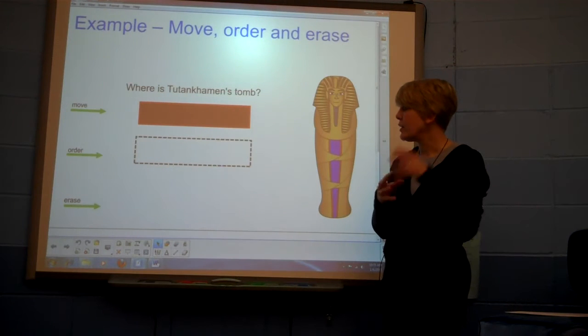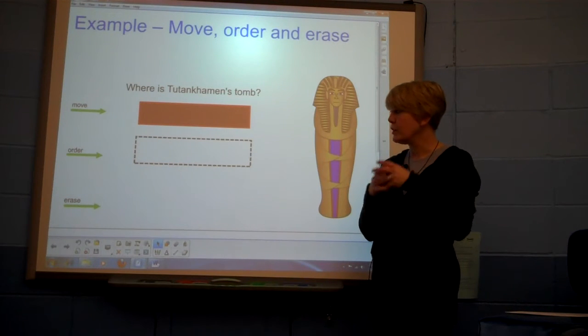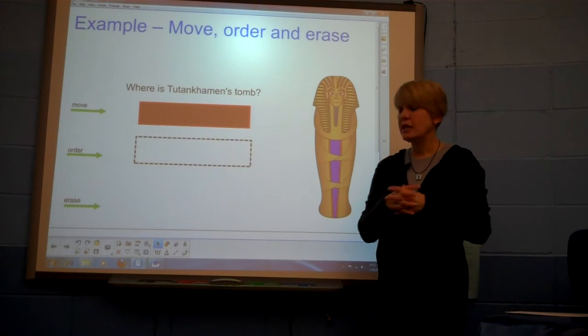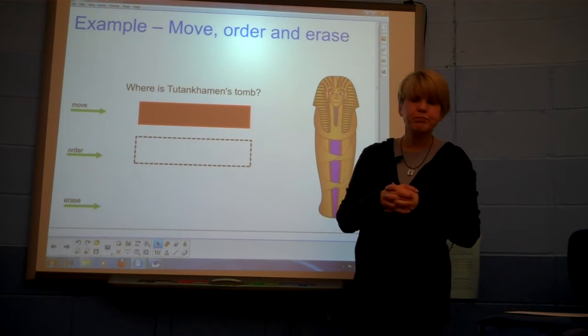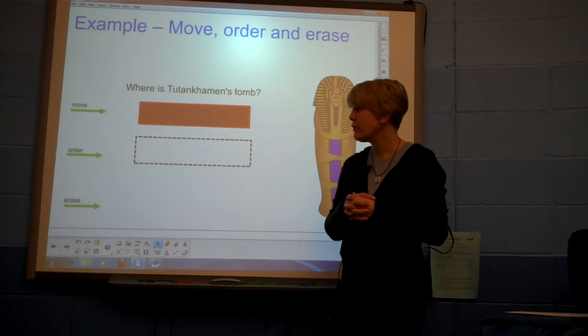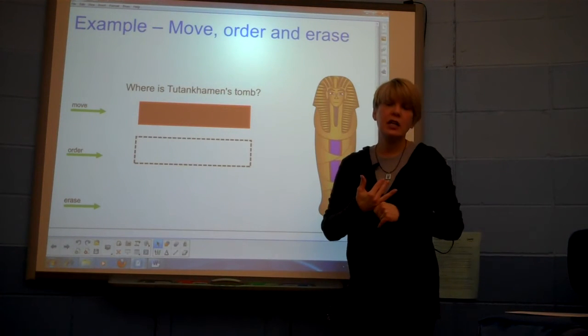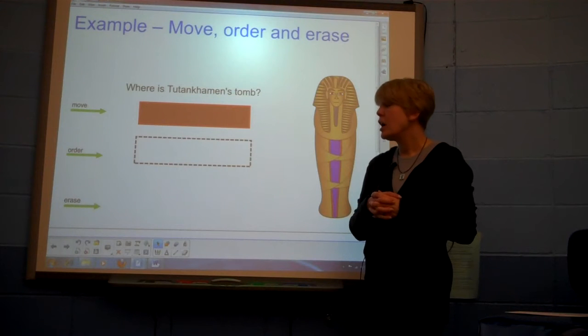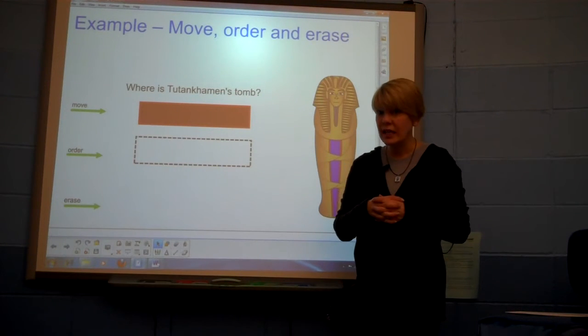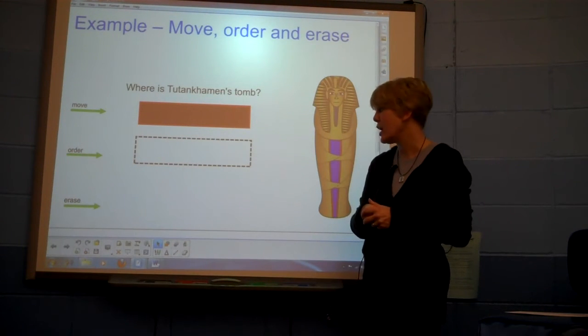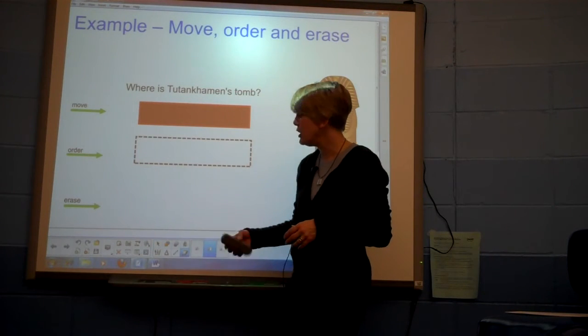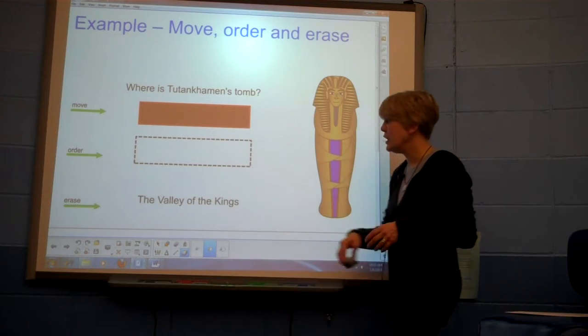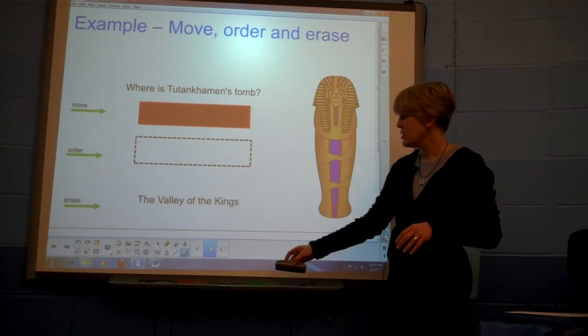The last method for hide and reveal is erase and reveal. And in this technique, again, there are three steps. A little bit simpler than order and reveal. You type the text in a color that contrasts with the background. You then cover the text with digital ink in the same color as the background. And in order to reveal it, you pick up the eraser and erase that digital ink revealing that answer underneath.